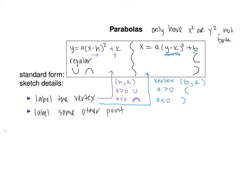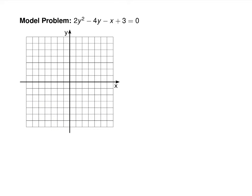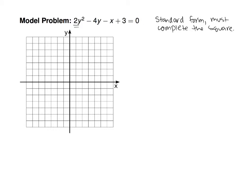Now let's look at a parabola problem: 2y² − 4y − x + 3 = 0. You can tell this is a parabola because only y is squared. To get it into standard form, we almost always need to complete the square. I'm going to move the x over: 2y² − 4y + 3 = x. The fact that we have x = (stuff with y²) tells me we're going to have a sideways parabola.